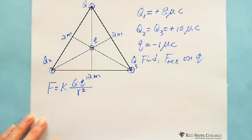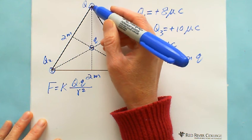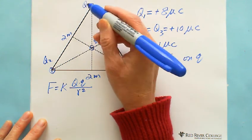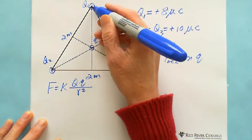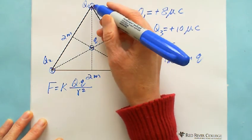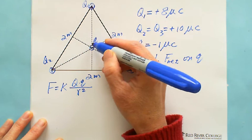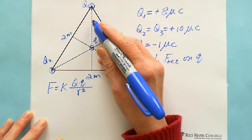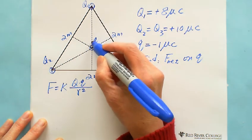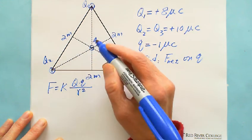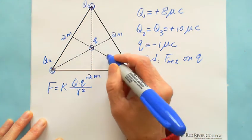First, let's talk about the force between Q1 and small q. Because Q1 is positive and small q is negative, they attract each other. Also, Q2 is positive and small q is negative, so they also attract. And Q3 positive, small q negative, also attraction.